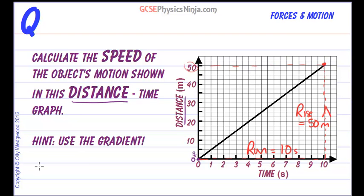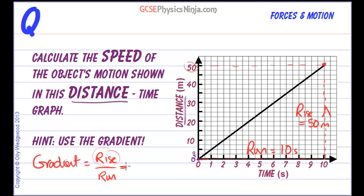How do we find the gradient? The gradient is calculated by dividing the rise by the run — remember, the rise rises to the top of this division. Putting the numbers in: the rise is 50 meters, the run is 10 seconds. Including the units shows we're making meters per second, hence speed or velocity. So that gives us 5 meters per second.